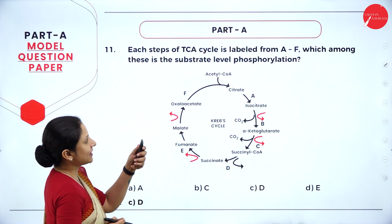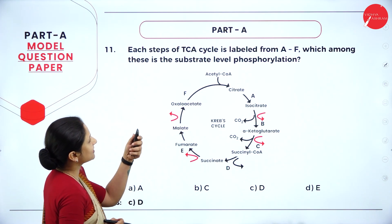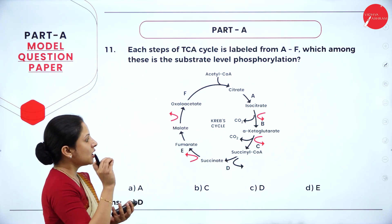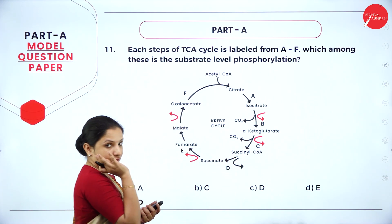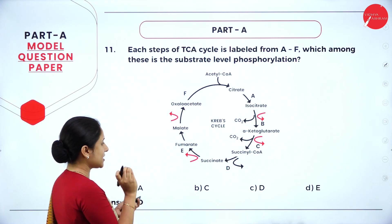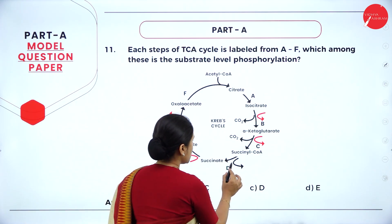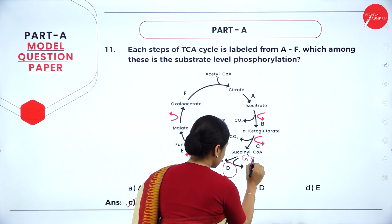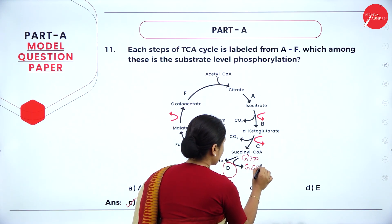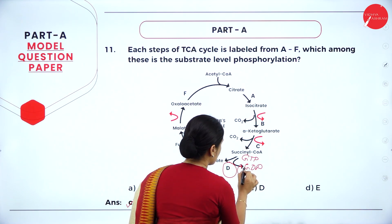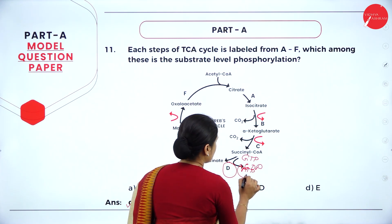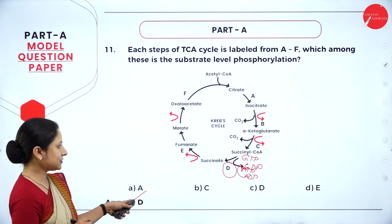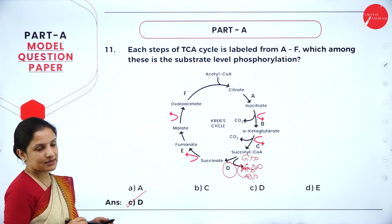Question 11: steps of the TCA cycle are labeled A to F — which step is substrate-level phosphorylation? Substrate-level phosphorylation occurs at step D, where succinyl-CoA is converted into succinate. During this step, GTP is converted to GDP and phosphorylation of ADP occurs. Therefore answer D is correct.